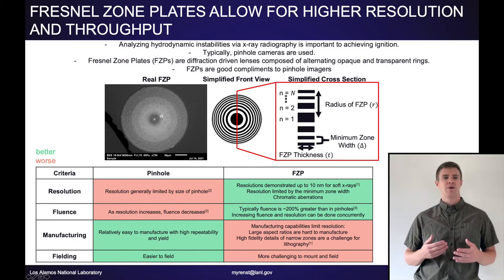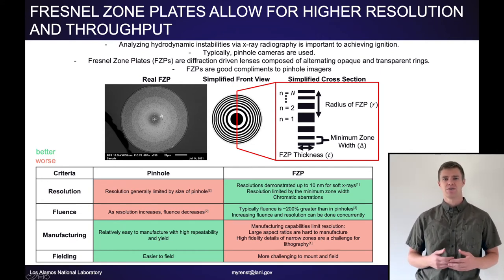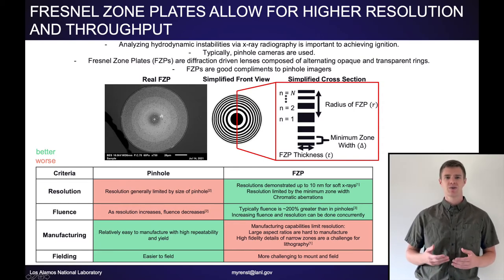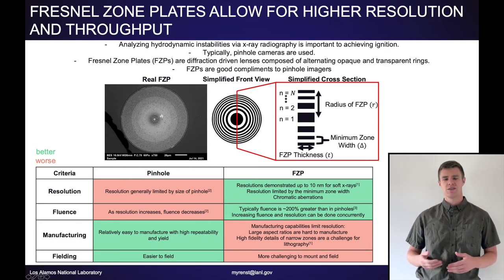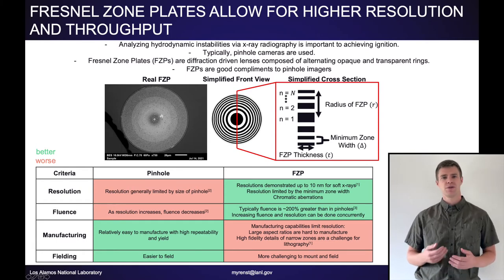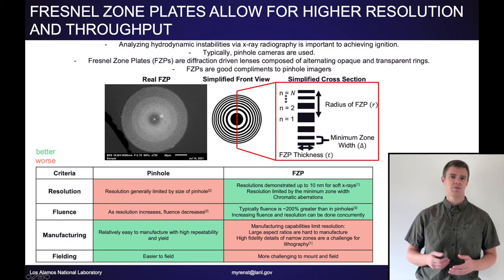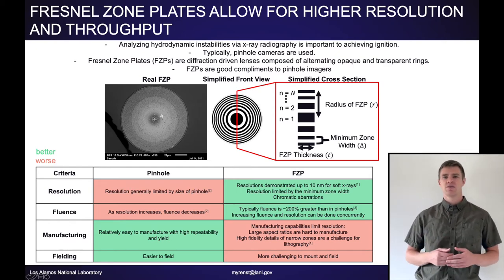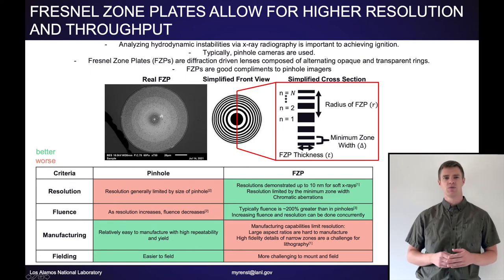A common method for analysis stems from x-ray radiographic images of these instabilities. While usually this is done via pinhole cameras, which have much to recommend them, they're less strong in the resolution and signal throughput criteria. Poised as strong complements to pinhole cameras are Fresnel Zone Plates, or FZPs. FZPs are diffraction-driven lenses composed of alternating opaque and transparent rings. While they are more difficult to manufacture and field, they can reach higher resolutions and better throughputs than pinhole cameras.